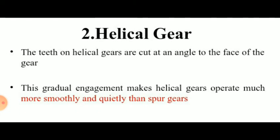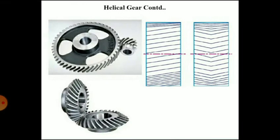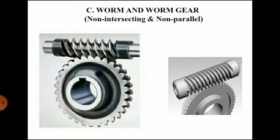The second type is helical gears. In these gears, the teeth are cut at an angle with the axis of the gear. These gears are used for transmitting power between parallel shafts as well as non-parallel and non-intersecting shafts. Then worm and worm wheel — it is a non-intersecting and non-parallel type, used for connecting driving and driven shafts whose axes are non-parallel and non-intersecting. It is used for large speed reduction.